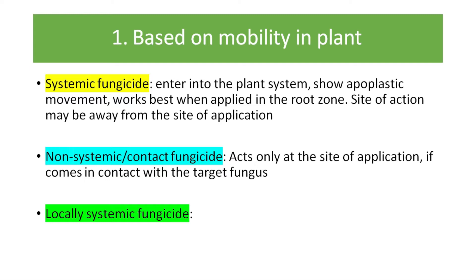Non-systemic or contact fungicides act only at the site of application — they work if they come in contact with the target fungus. So if the fungus is in the soil, we have to apply the contact fungicide on the soil. If the fungus is present on the leaf surface or foliage, then we have to apply the contact fungicide on the leaf surface only.